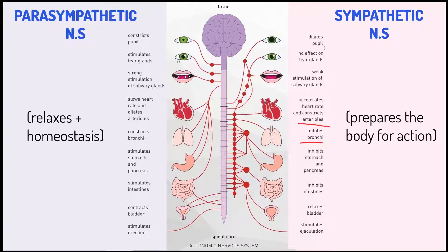The dilation of pupils allows for your eyes to absorb more light. And the inhibition of the digestive system allows for more energy that is normally used in digestion to be redistributed to other more important areas.